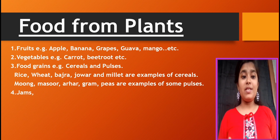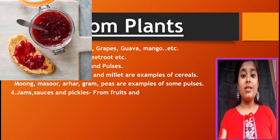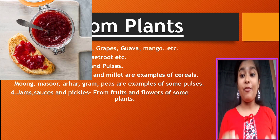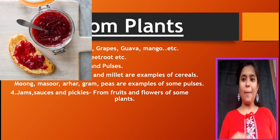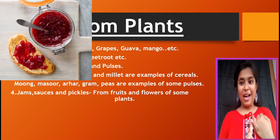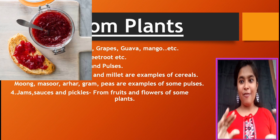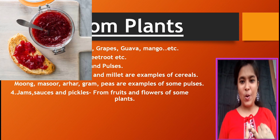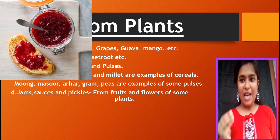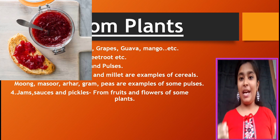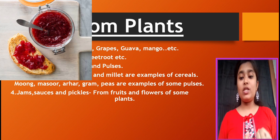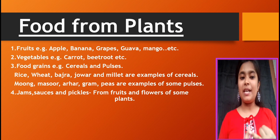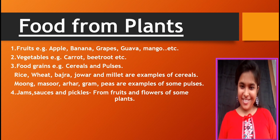The fruits and flowers of some plants are used to make jams, sauces and pickles. Jam, sauces and pickles are made from fruits and flowers of some plants — like mango jam, apple jam that we have with bread, tomato sauce, red chili sauce and mango pickle. Those are so yummy and tasty! So we obtain sauces, pickles and jams from plants.